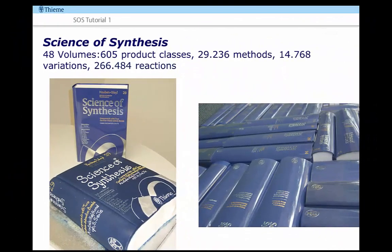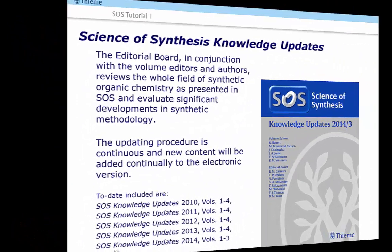The original volumes of Science of Synthesis were published over a 10-year period from the year 2000 to the year 2010. The 48 volumes contain over 600 product classes and nearly 270,000 reactions. All volumes in the series are text and structure searchable using the electronic version.